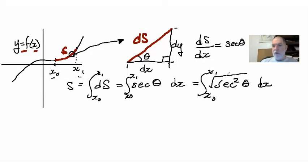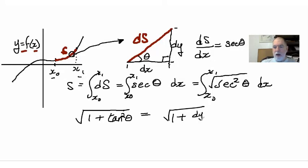From here on I'm just going to deal with the integrand. Now we've got the secant squared theta, which we can also represent as one plus the tan squared of theta, and that equals square root of one plus, well what's the tangent? The tangent is going to be dy by dx, and of course we got to remember to square it.